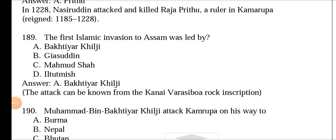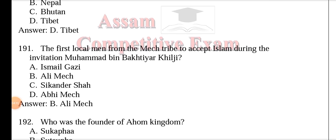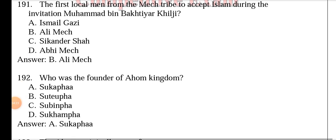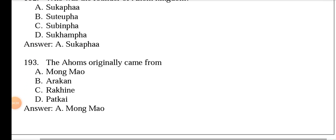The first Islamic invasion of Assam was led by Bhaktiyar Khilji. This is known from the Kanai Barasi rock inscription. Muhammad bin Bhaktiyar Khilji attacked Kamarupa on his way to Tibet. The first local man from the Mech tribe to accept Islam during the invasion of Muhammad bin Bhaktiyar Khilji was Ali Mech.